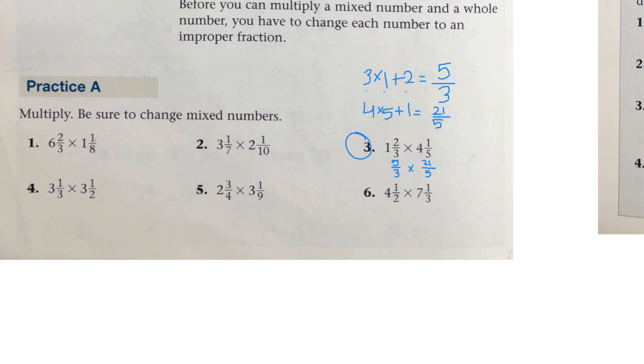Can we cross-cancel? 5 and 5 have a common factor with 1 and 5. So if we divide both 5 by 5, we have 1.